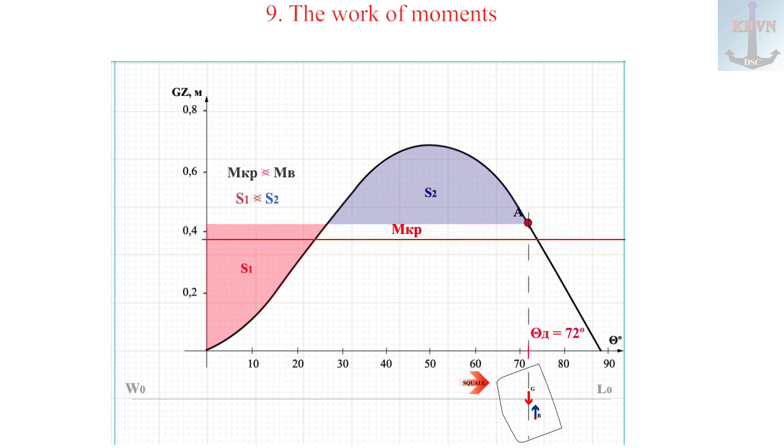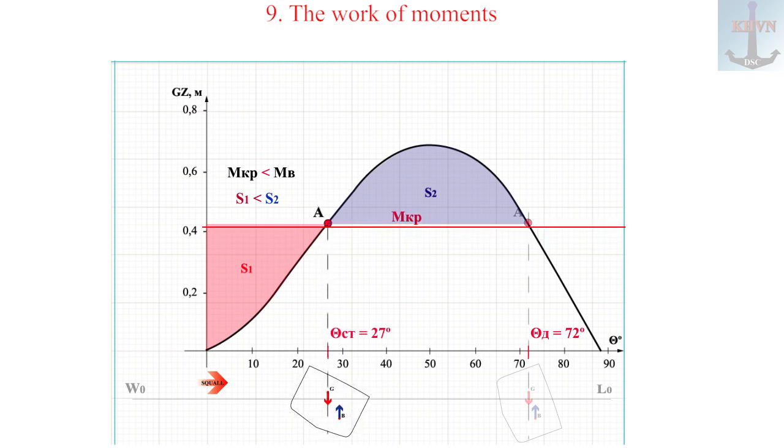And if the healing moment weakens, then the restorer will cope with the dynamic listing and the ship will level out through damped rolling until it settles down with a static list approximately 27 degrees.